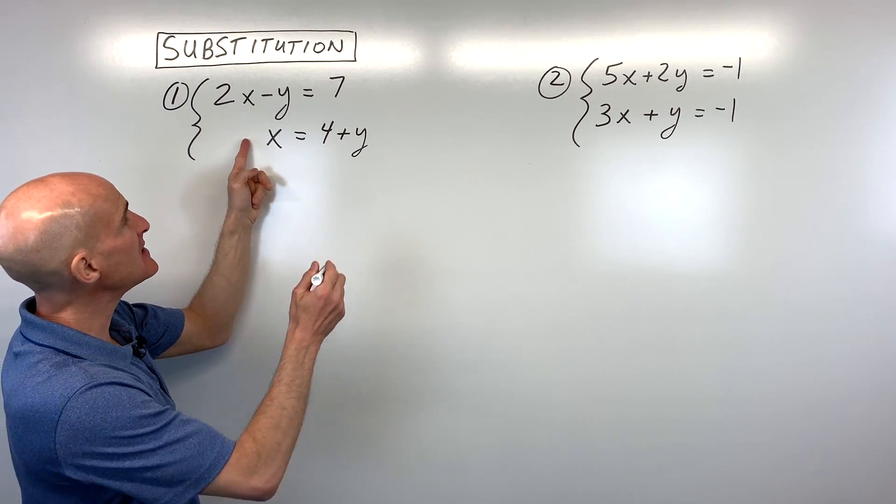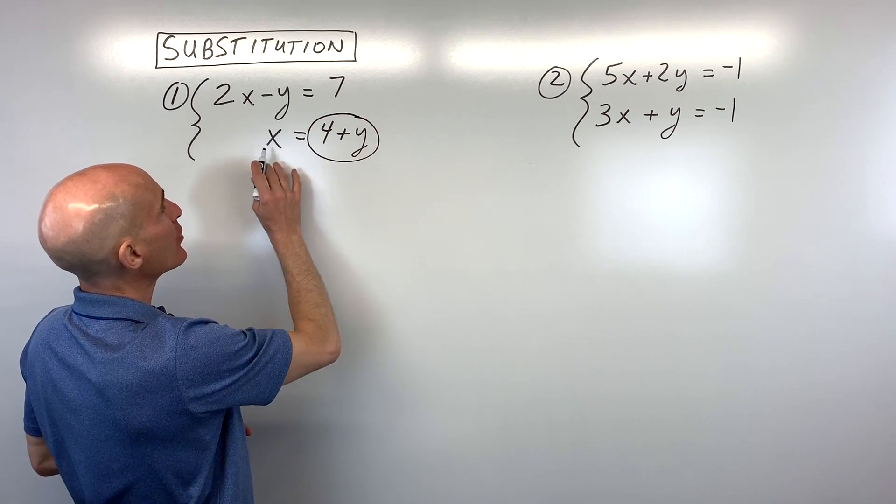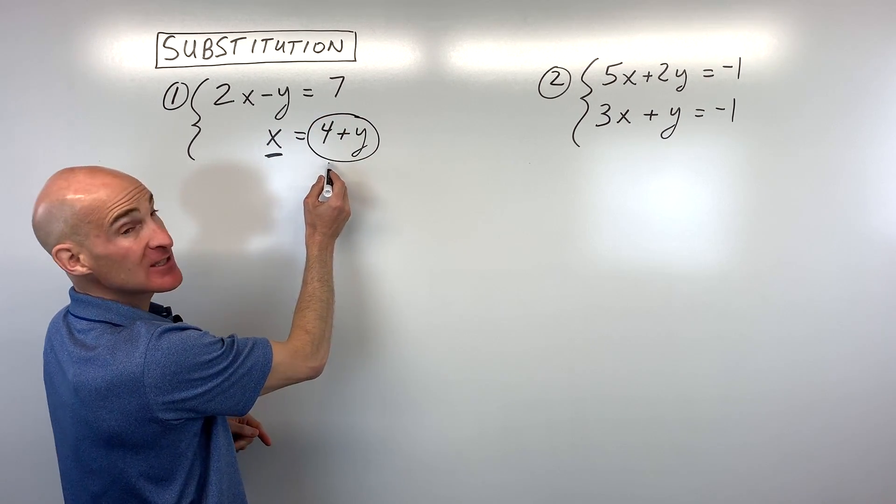The first example is easier because we know what x equals - we already have x by itself: x equals 4 plus y.